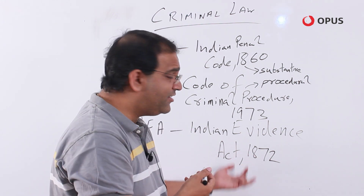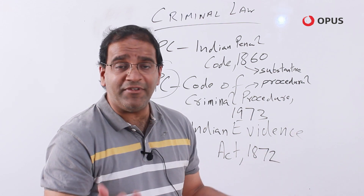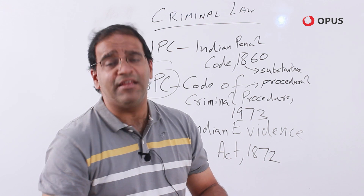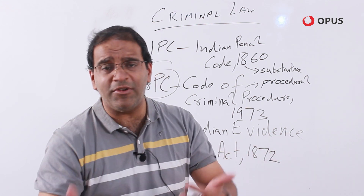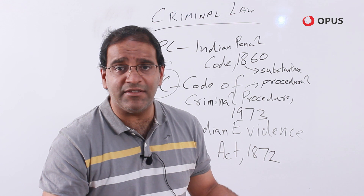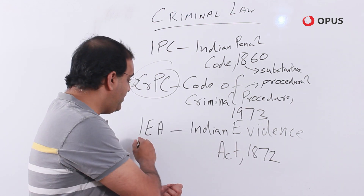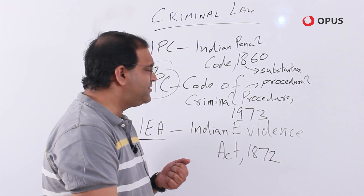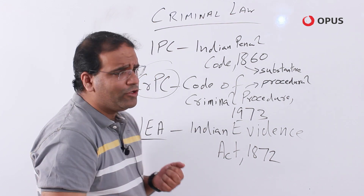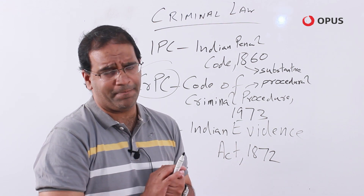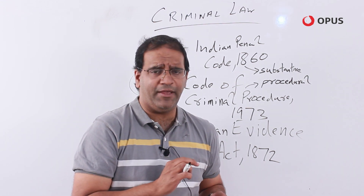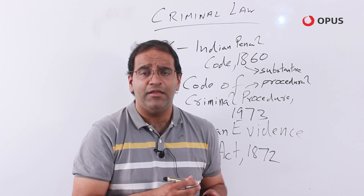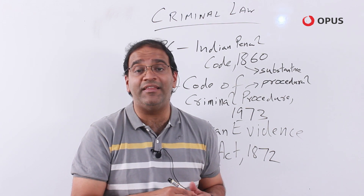The Evidence Act tells us what type of evidence is required, how much evidence is required — direct evidence, indirect evidence, circumstantial evidence, documentary evidence, and in today's day and age, electronic evidence — all of which finds mention in the Indian Evidence Act of 1872. As far as crimes are concerned, it is important to know two fundamental rules. The first rule is that any person accused of having committed a crime is presumed to be innocent until proven guilty.